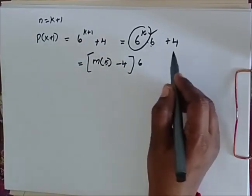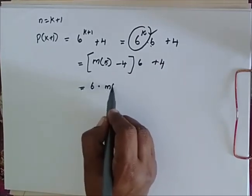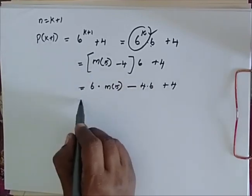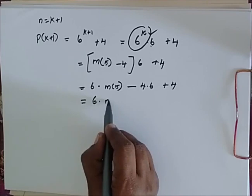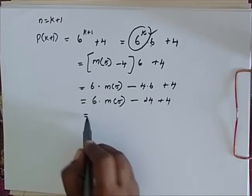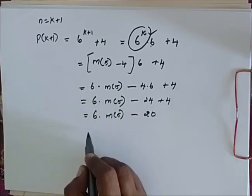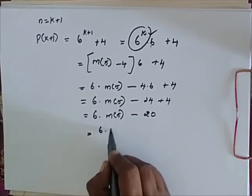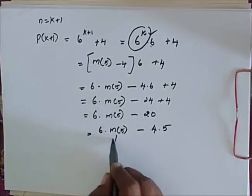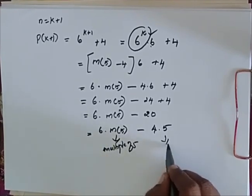I have this 6 and I have this 4. This is equal to 6 into 5m minus 4, into 6 plus 4. This is equal to 6 into 5m minus 24 plus 4. This is equal to 6 into 5m minus 20. This is equal to 6 into 5m minus 4 into 5. So this is a multiple of 5.